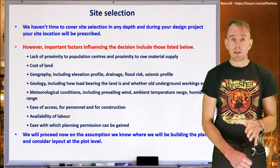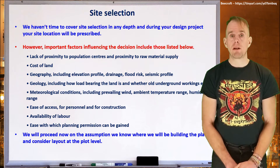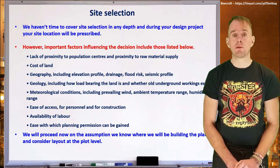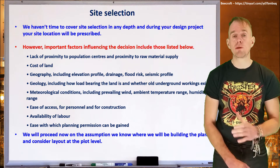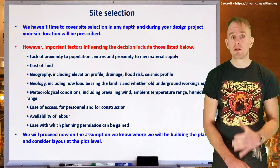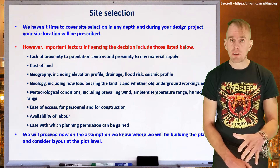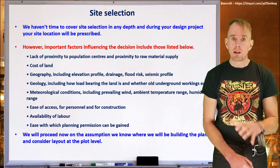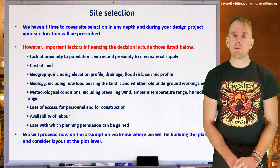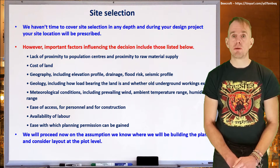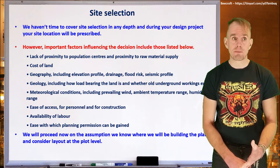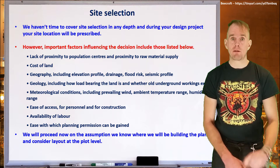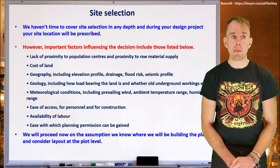Another key thing to think about is raw material supply. If you look at the history of the chemical industry, a lot of the old chemical sites were located close to sites of raw materials — chloroalkali sites located next to old salt beds, and sites that produce petrochemicals may be close to landing sites for oil and gas. You also need to think of the cost of the land, because that will factor into the economics of the overall project.